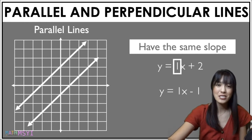So if we look at the equation here, the slopes for these two lines are both one.